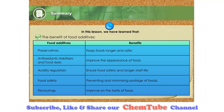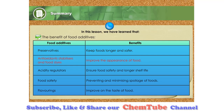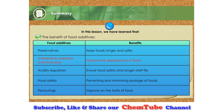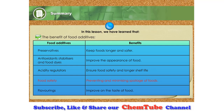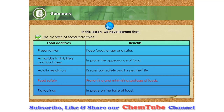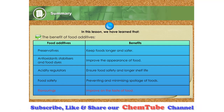The use of food additives has given us the following benefits: a wide variety of food is made available through the use of preservatives; attractive appearance of food through the use of antioxidants, stabilizers and food dyes; ensured food safety and longer shelf life by using acidity regulators; a higher standard of food safety by preventing and minimizing spoilage; and improved taste of food by using flavorings.